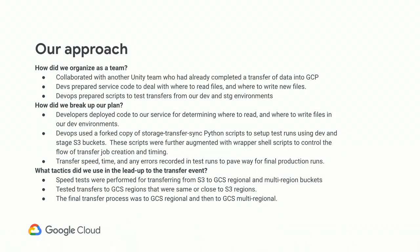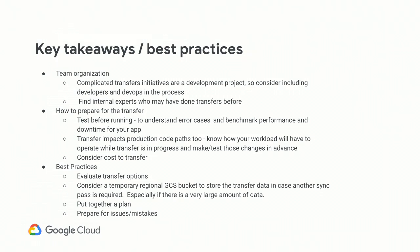We tested with smaller data in buckets in the same or close regions to S3 and GCS. The final process was a regional-to-regional transfer, then inside GCS we did a multi-regional transfer. Key takeaways: these transfers can be complicated, so devs and DevOps should work together to break down the process. I suggest finding any internal experts who have done this transfer before, because you can learn from their experience and adapt your approach.